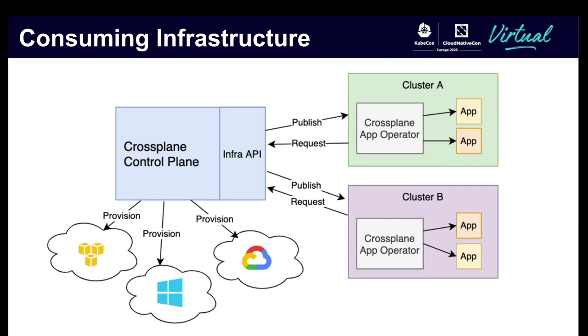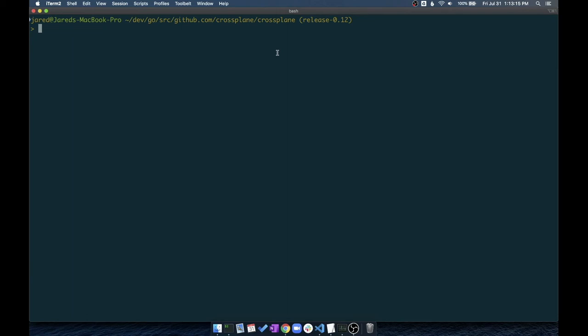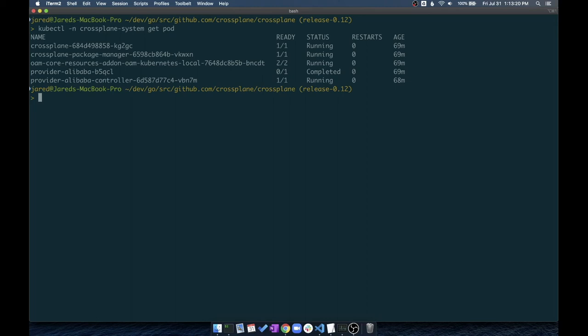Now let's see it all in action with a demo. We're going to walk through how to build a global control plane API and use that API to provision infrastructure and deploy standardized applications in a global context. I already have the global control plane set up — Crossplane installed, the Crossplane package manager, support for OAM and Alibaba. I haven't defined my infrastructure API yet, and I don't have any applications running.